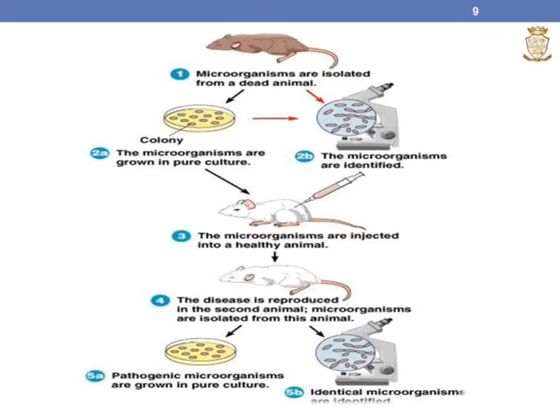The process involves: microorganisms are isolated from a dead animal, then grown in pure culture, forming colonies in culture media, and identified under the microscope. The microorganisms are then injected into a healthy animal under laboratory conditions. The disease is reproduced in the healthy animal. The microorganisms are then isolated from the newly infected animal, grown again in pure culture, forming colonies, and once again identified under the microscope.